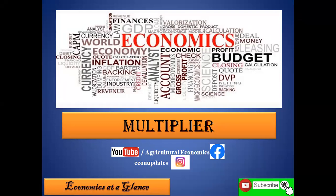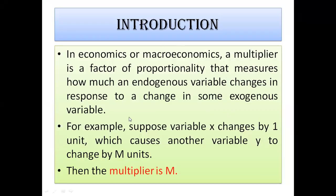In economics or macroeconomics, a multiplier is a factor of proportionality that measures how much an endogenous variable changes in response to a change in an exogenous variable. Endogenous variable means dependent variable and exogenous variable is independent variable. For example, if variable X changes by one unit and causes variable Y to change by M units, then the multiplier is M.